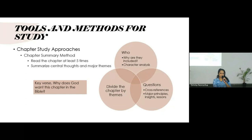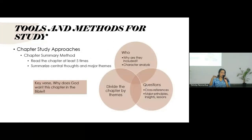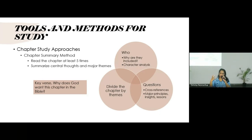The chapter study approach has three different options. One is summarizing the chapter. In this method, you read through the chapter a few times — it's recommended five times — just to get an overall understanding of the chapter's message, and then summarize what the major themes are.